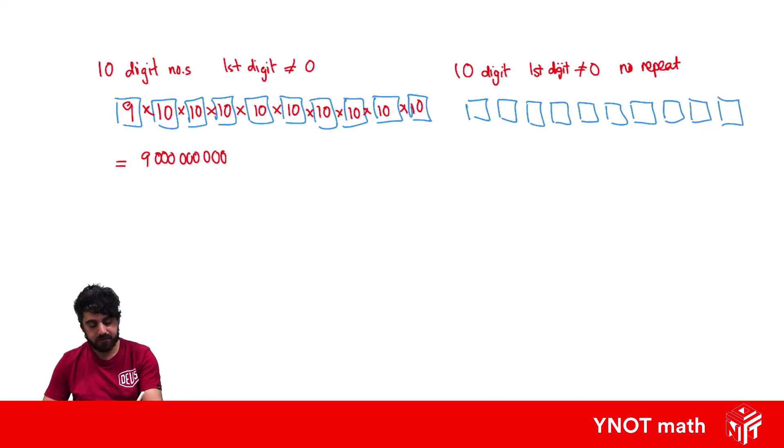We can't begin with zero so we still have our nine choices. Now no matter what, we've selected a number which means we only have nine choices for our next one because we don't want to repeat. Now we've chosen two numbers so that means we've only got eight to choose from, and then seven, six, five, four, three, two, and one. Multiplying all these together will give us the arrangements of how many 10 digit numbers we can have where zero is not the first digit and there's no repetition of digits. All of that's just going to simplify to 9 times 9 factorial and that's going to give us 3,265,920 possible numbers.